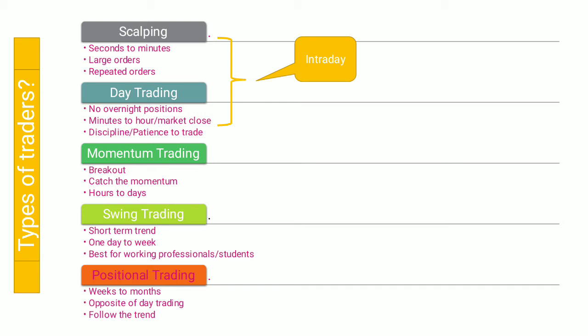The next type of trader is called a swing trader. These people wait for a particular short-term movement or trend. Using the same example of a stock ranging from 100 to 105, they look for a short-term swing — meaning an upside or downside move — and enter accordingly. They wait for one day to one to two weeks to take a benefit. This style is particularly suited for working people who don't have time to sit in front of a monitor watching charts all day.